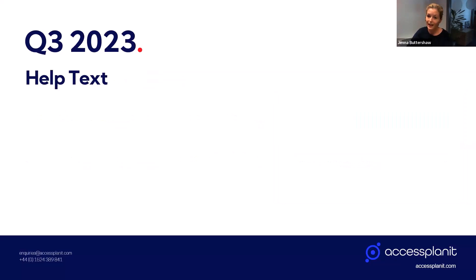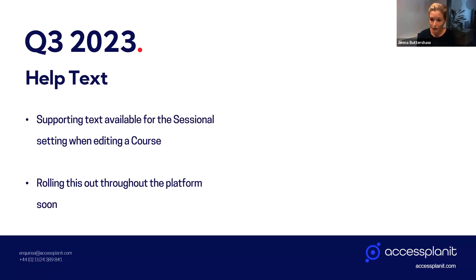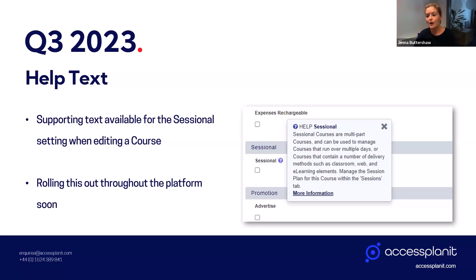Moving on to supporting help text throughout the platform, which will be slowly rolling out. We've started with the sessional setting, available when you're editing courses, but we will be rolling this out throughout the other forms. The help text will be accessible via little question mark icons on the settings in your platform forms, providing clarity on what the settings are for and helping new team members get to grips with the platform. Many of those help texts will also include a link to our knowledge base so you can learn more and get more out of the platform.